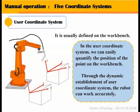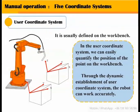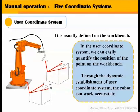The user coordinate system is usually defined on the workbench. In the user coordinate system, we can easily quantify the position of points on the workbench. Through the dynamic establishment of the user coordinate system, robot positioning can be corrected.